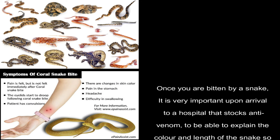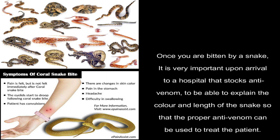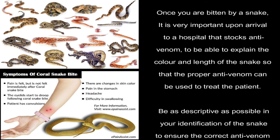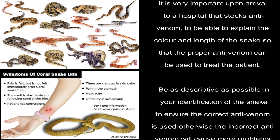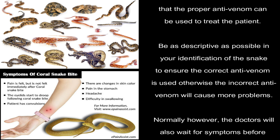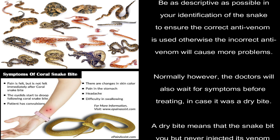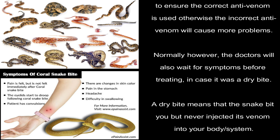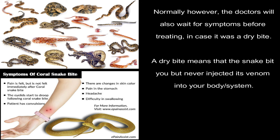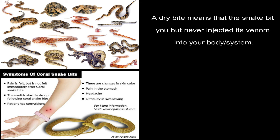Once you are bitten by a snake, it is very important upon arrival at a hospital that stocks anti-venom to be able to explain the color and length of the snake so that the proper anti-venom can be used to treat the patient. Be as descriptive as possible in your identification of the snake to ensure the correct anti-venom is used, otherwise the incorrect anti-venom will cause more problems. Normally, however, doctors will also wait for symptoms before treating, in case it was a dry bite — meaning the snake bit you but never injected its venom into your body.